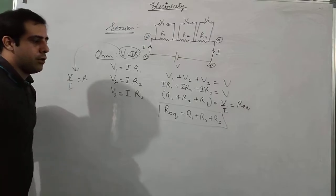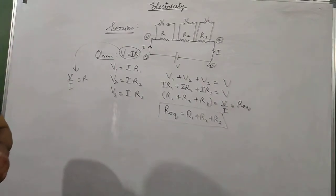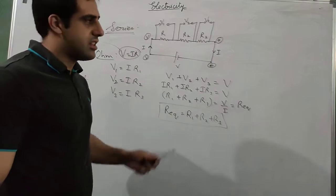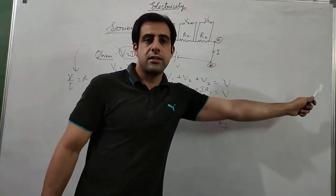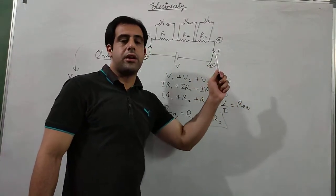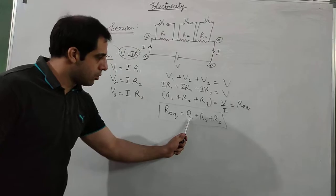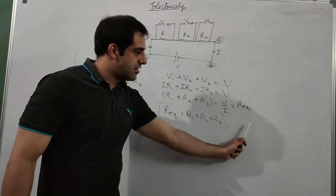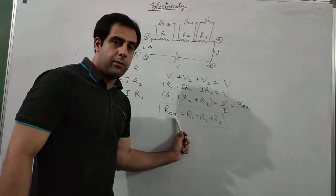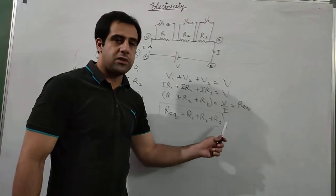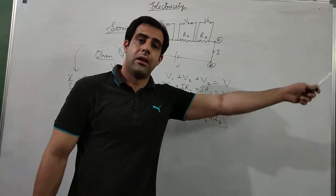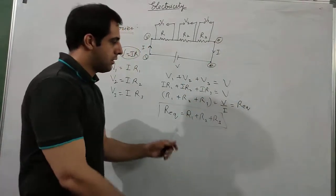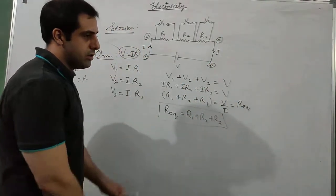This is the formula for series combination. Whether there are 3 resistors, 10 resistors, or 100 resistors connected in series, the equivalent resistance equals the sum of all the resistances. For example, if there are 10 resistances, R equivalent equals R1 plus R2 plus R3 plus ... plus R10 — add all of them.